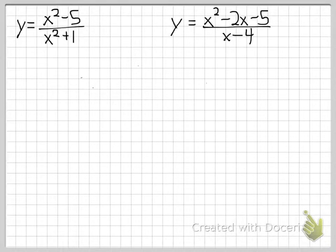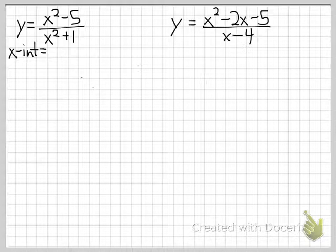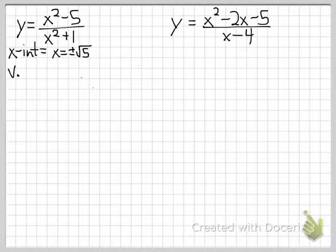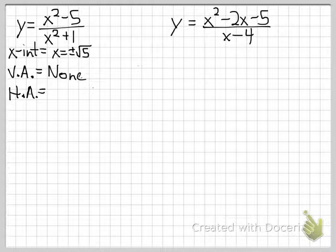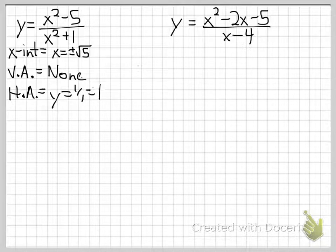For the first of these, the x-intercepts come from setting x squared minus 5 equal to zero: x squared equals 5, so the intercepts are at plus or minus the square root of 5. For vertical asymptotes, setting x squared plus 1 equal to zero gives x squared equals negative 1, an imaginary solution, so there are none.